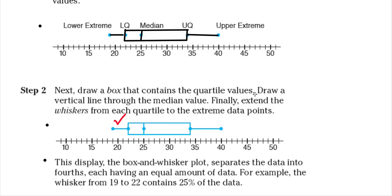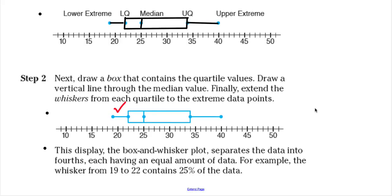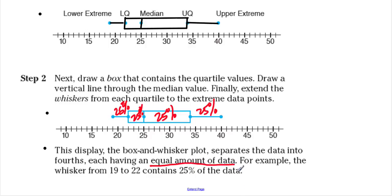This box and whisker plot separates the data into fourths, each having an equal amount of data. For example, the whisker from 19 to 22 contains 25% of the data. It doesn't matter how small or how big the box or the whisker is — each quartile will contain 25% of the data. The size of the box and the length of the whisker will not determine the amount of data in each quartile. It divides them into four equal parts. It's important to understand this when you are creating a box and whisker plot.